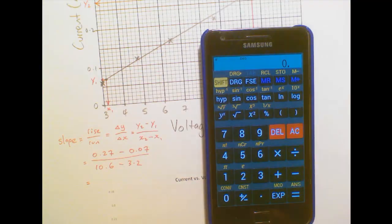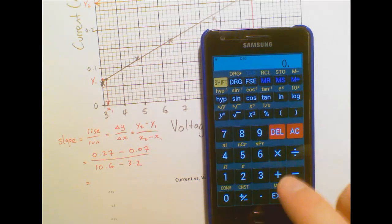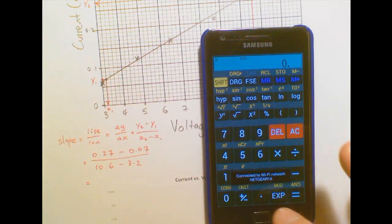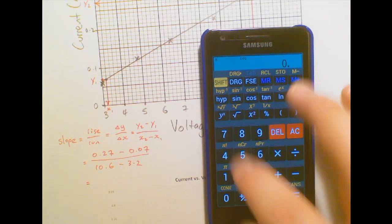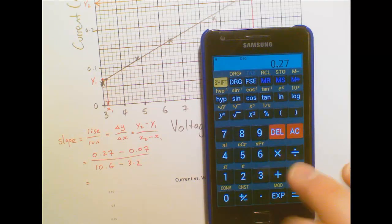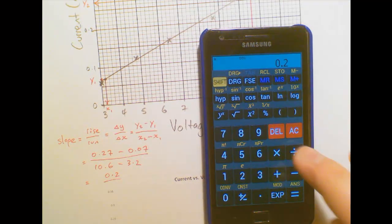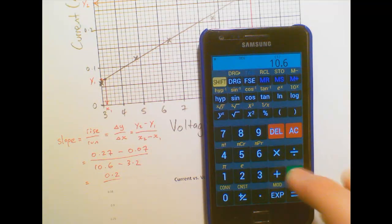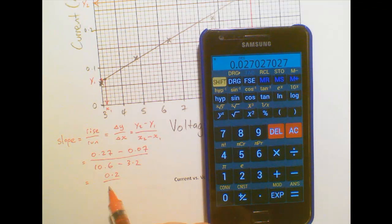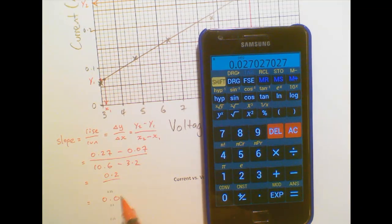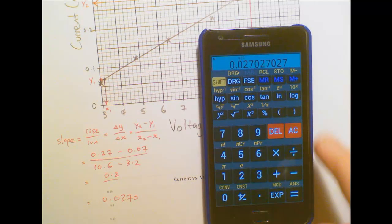So we've got 0.27 minus 0.07 is 0.2 over 10.6 minus 3.2. That's 0.0270, that'll do. I'll just write that down.